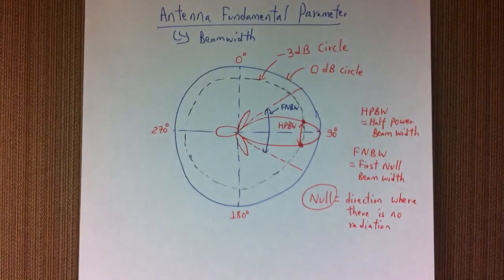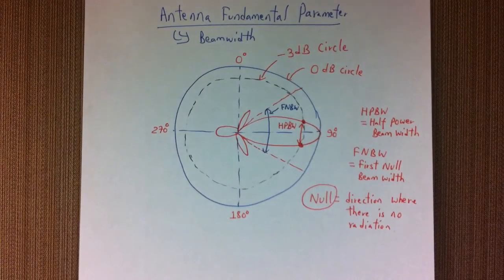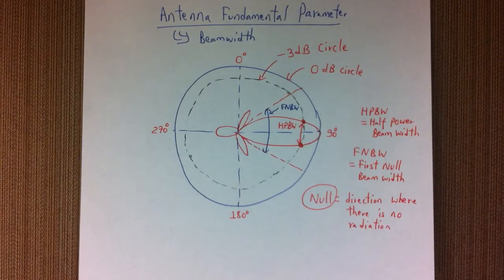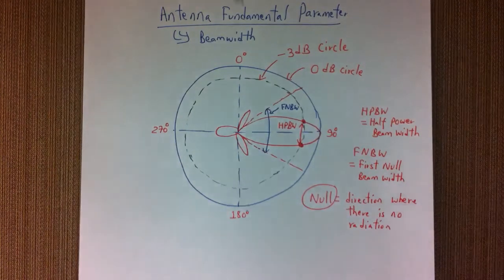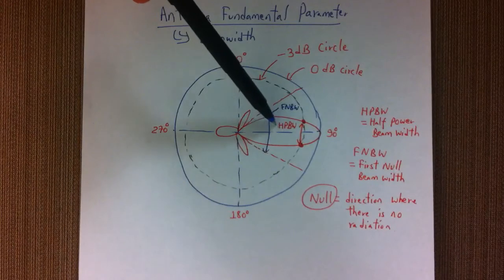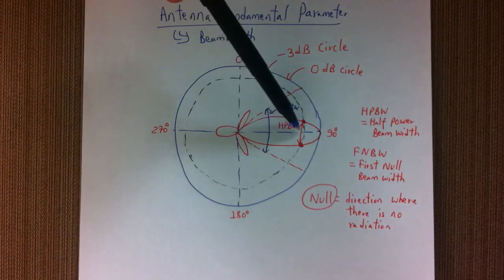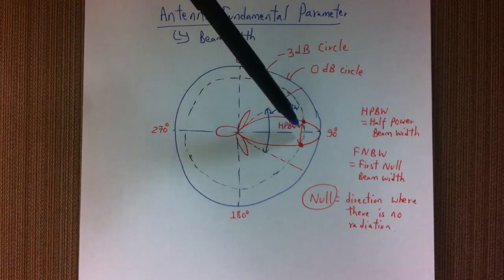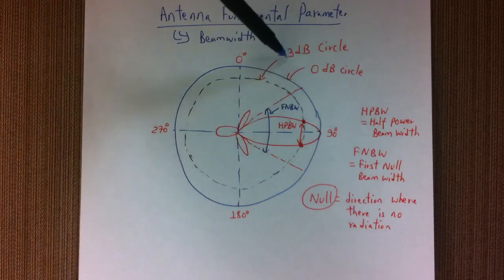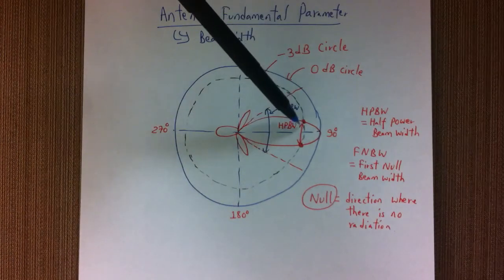Beam width of an antenna is basically the width of a radiation pattern of an antenna at different points. First, we have half power beam width, HPBW, which is basically at the negative 3 dB point.